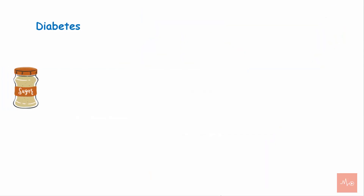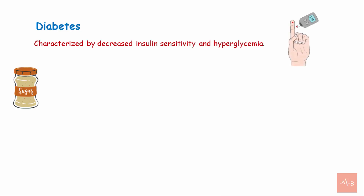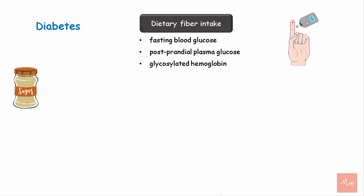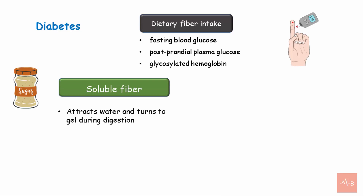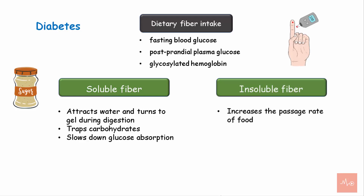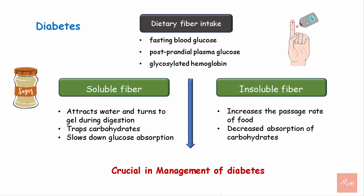Regarding diabetes and dietary fiber: diabetes is characterized by decreased insulin sensitivity and hyperglycemia. Dietary fiber has a positive effect on diabetic individuals through its effect on fasting blood glucose, postprandial plasma glucose, and glycosylated hemoglobin. Soluble fiber attracts water and turns into a gel during digestion, trapping carbohydrates and slowing down glucose absorption. Insoluble fiber increases the passage rate of food in the intestine and decreases the absorption of carbohydrates. Thus, dietary fiber can be crucial in the management of diabetes.